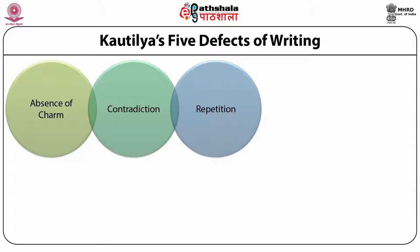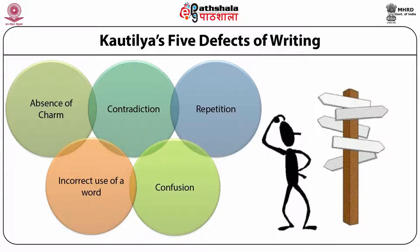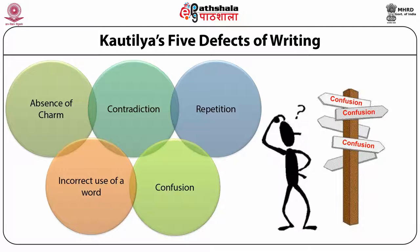When repetition occurs, the purpose of communication — to convey the message — is not achieved. The fourth defect of writing is incorrect use of words, such as using the wrong gender, tense or case. The use of a right word in the wrong context also changes the meaning of the text, leading to ambiguity. The fifth defect is confusion — not grouping similar themes together and grouping dissimilar themes together — which creates confusion in the reader's mind and the meaning gets lost.